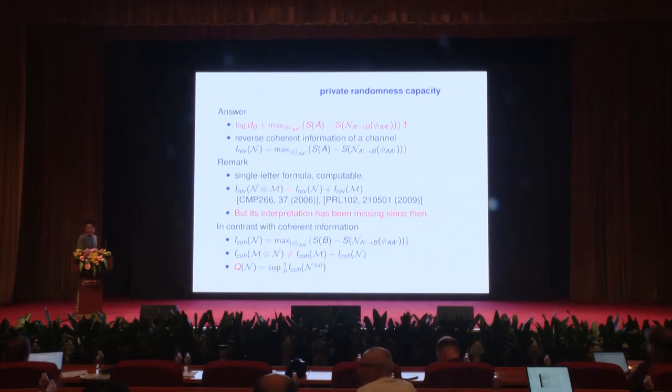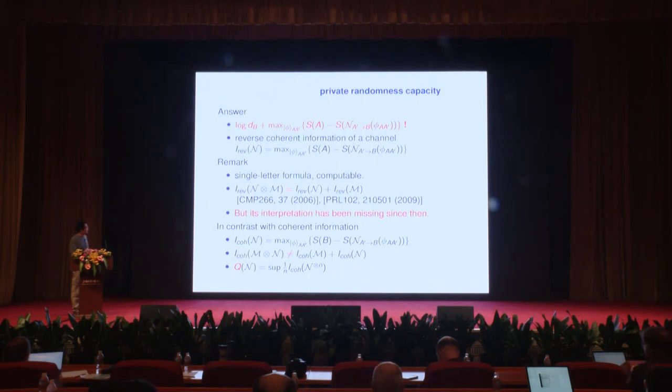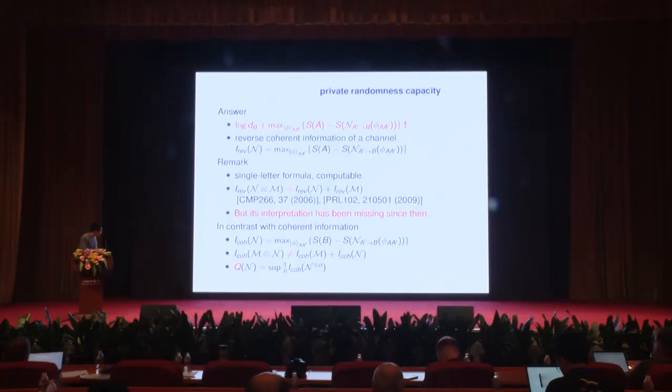Comparing with the coherent information of a channel: the only difference is that here it uses the von Neumann entropy of the input state, whereas the coherent information uses the entropy of the output state. The coherent information is not additive, but this does not prevent a good interpretation, since its regularization represents the quantum capacity of the channel.